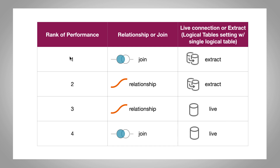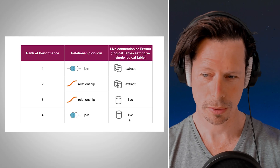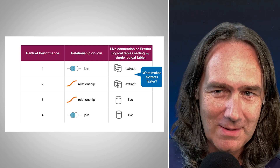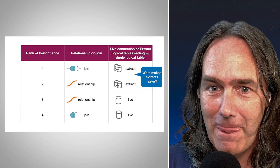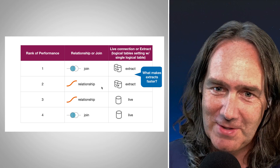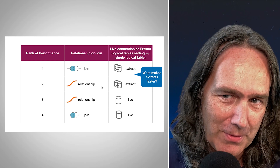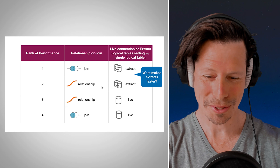I've ranked the performances from fastest (number one) to slowest (number four). The fastest was a join on an extract; number two was a relationship on an extract; number three was relationship with live; number four was join with live. The two extracts are fastest and the two lives are slowest — but interestingly, relationships are sometimes faster than joins on live, then slower on extract.